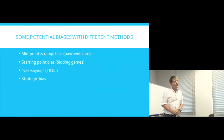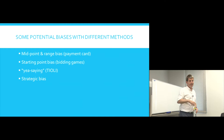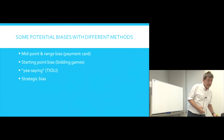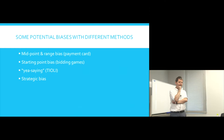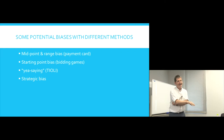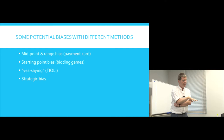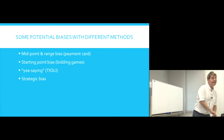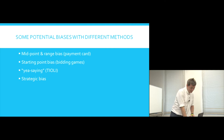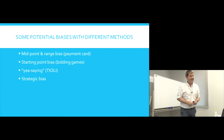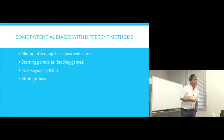Strategic bias describes a situation where people think they can change the outcome through their answer. For example, in the community-based health insurance study, people might think: if I give my true value, I might have to pay this much; whereas if I come in with a low valuation, it's less likely I'll have to pay so much. Or they might give a high valuation thinking it will make the program more likely to be offered. There's a very famous study in Sweden related to comedy programs demonstrating this.